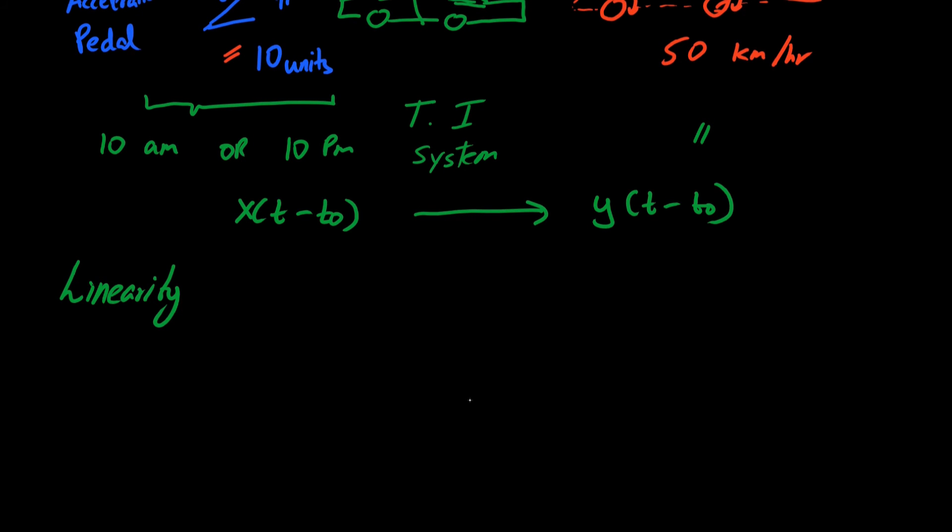The first property is homogeneity, which is that if we have an input x(t) and we scale it by a factor, say alpha, the system would have an output which is y(t), and that output would again be a scaled version with respect to alpha.